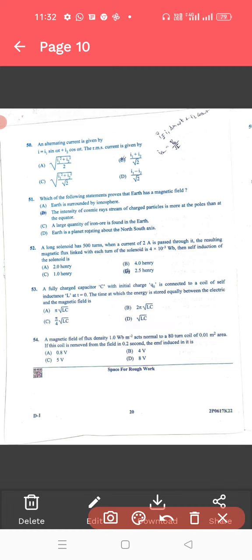Alternate current. For 50th question, the correct answer is root of I1 square plus I2 square by 2. So, it is A. Then, 51. For 51 question, it is intensity of the cosmic rays. So, it is B. 52, a long solenoid. For 52, it is 1.1 henry is a correct answer.